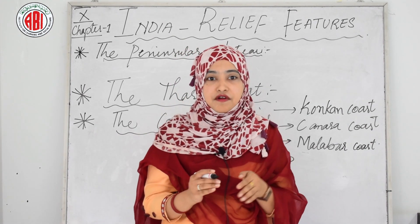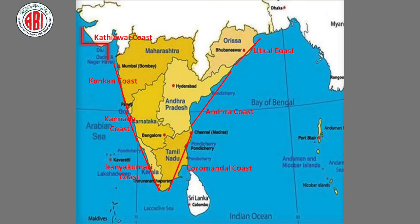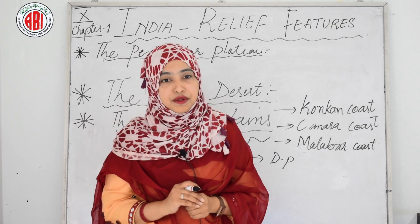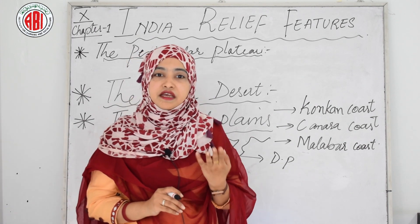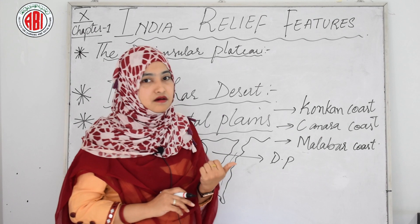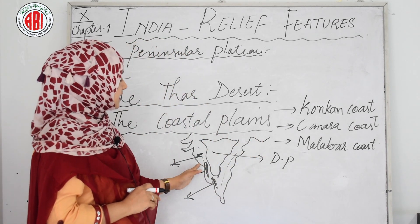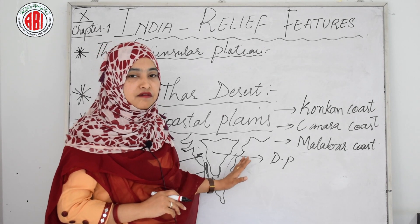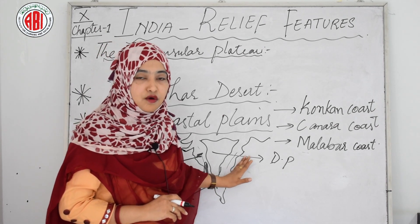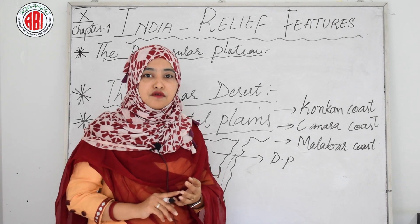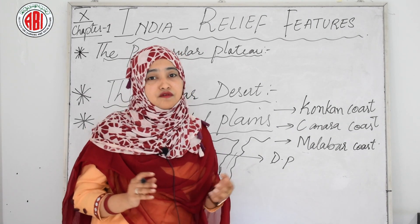The Bay of Bengal plains stretch from the Mahanadi in Orissa to the Kaveri delta in Tamil Nadu. These plains are formed by the rivers Mahanadi, Godavari, Krishna and Kaveri and are very fertile. Compared to the western coast, this side is very fertile with alluvial soil due to the origination and flow of these rivers.